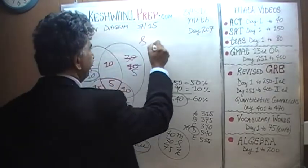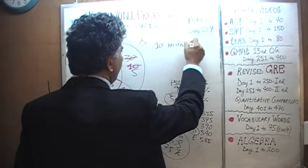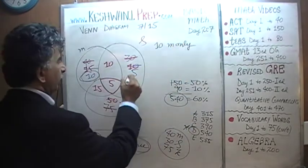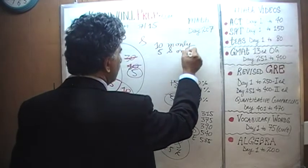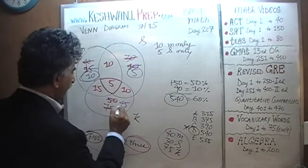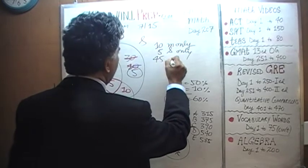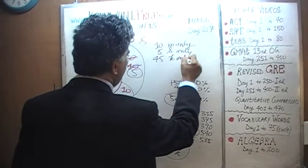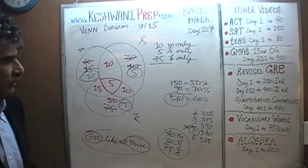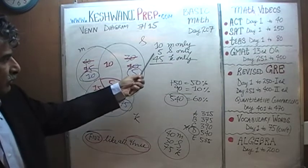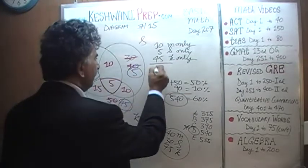So: 10 of them like music only, 5 of them like sports only, and 45 of them like kiting only. The distribution has changed, but the answer has not: 45 plus 5 is 50, plus 10 is 60. You still get 60.